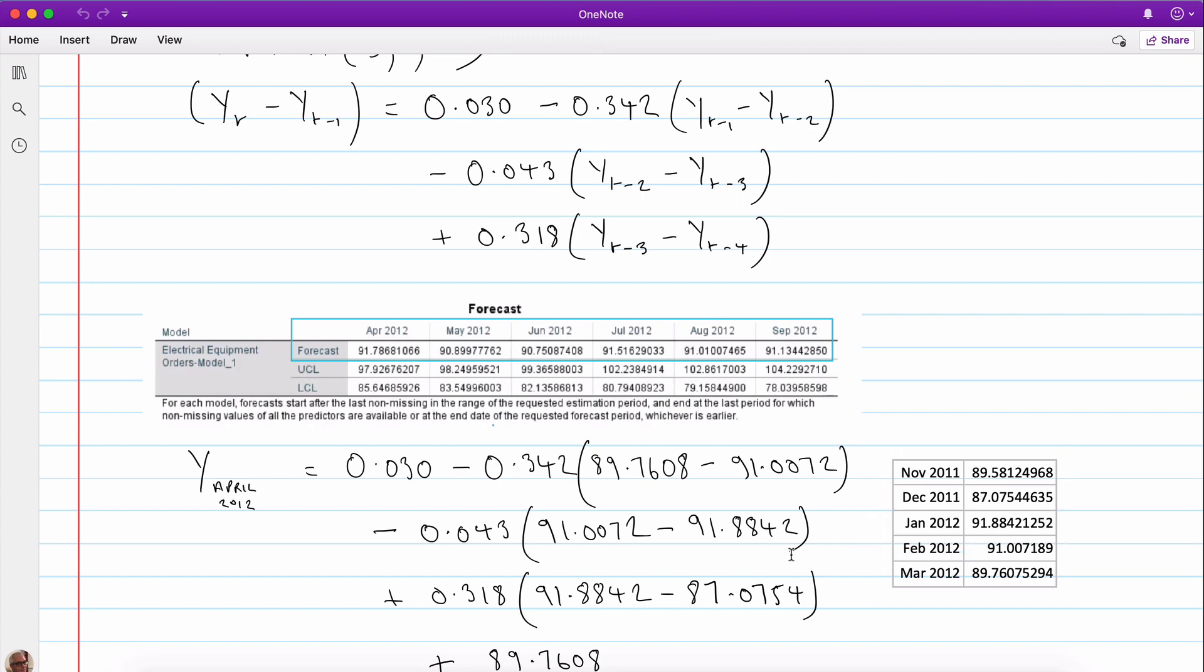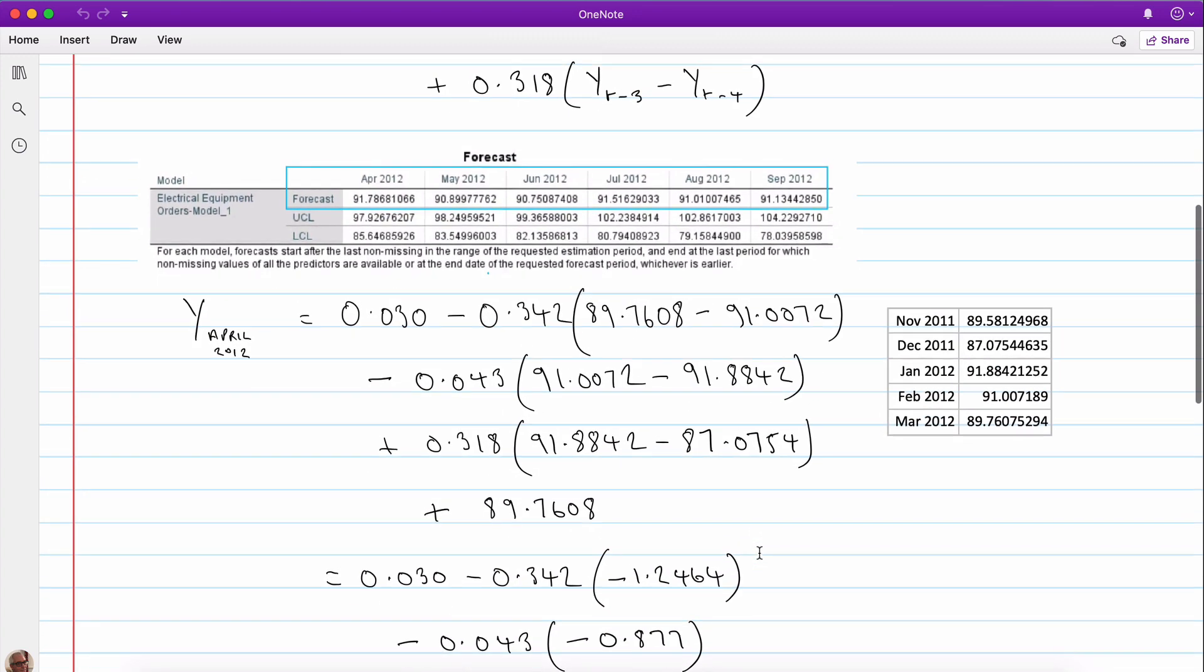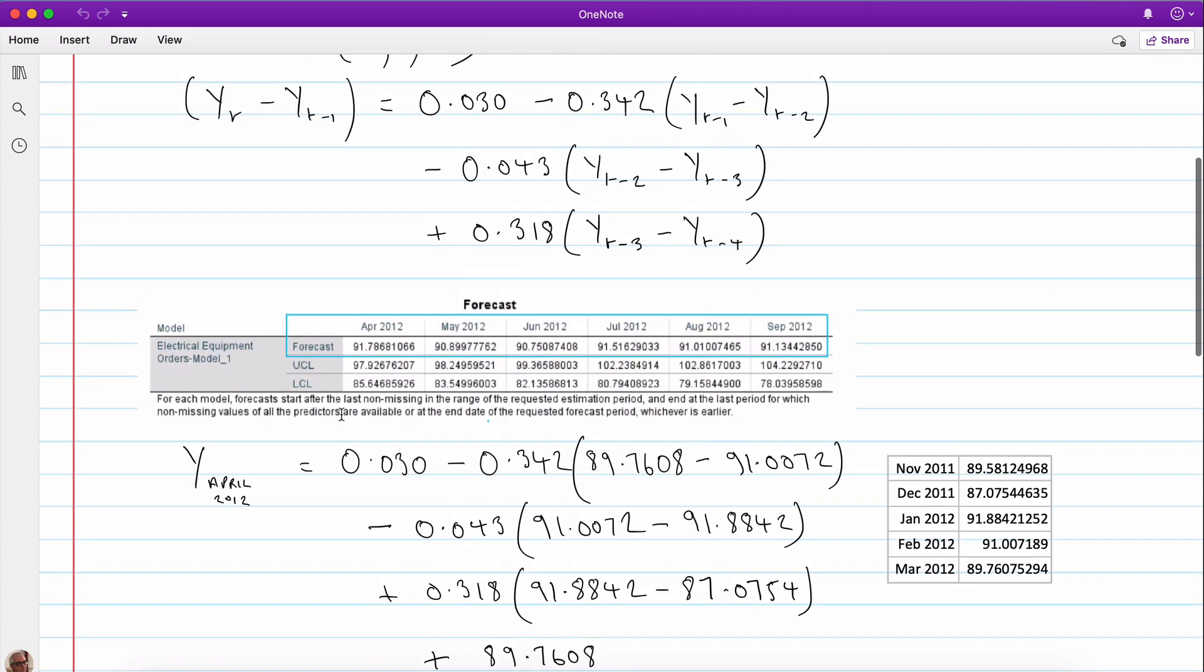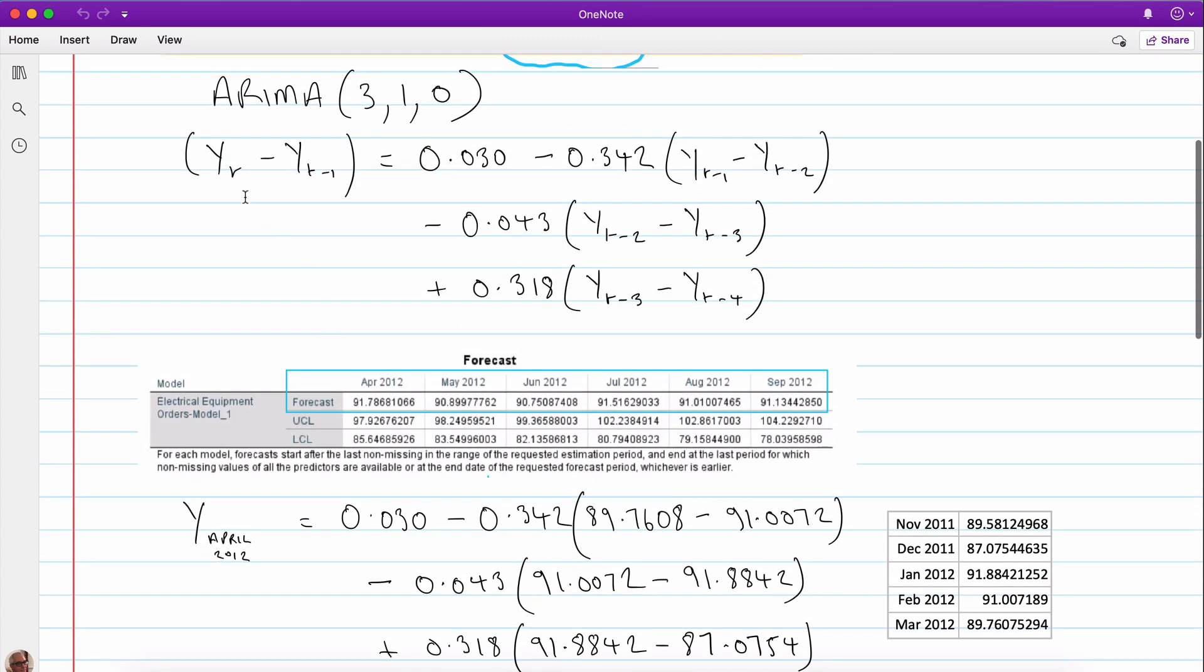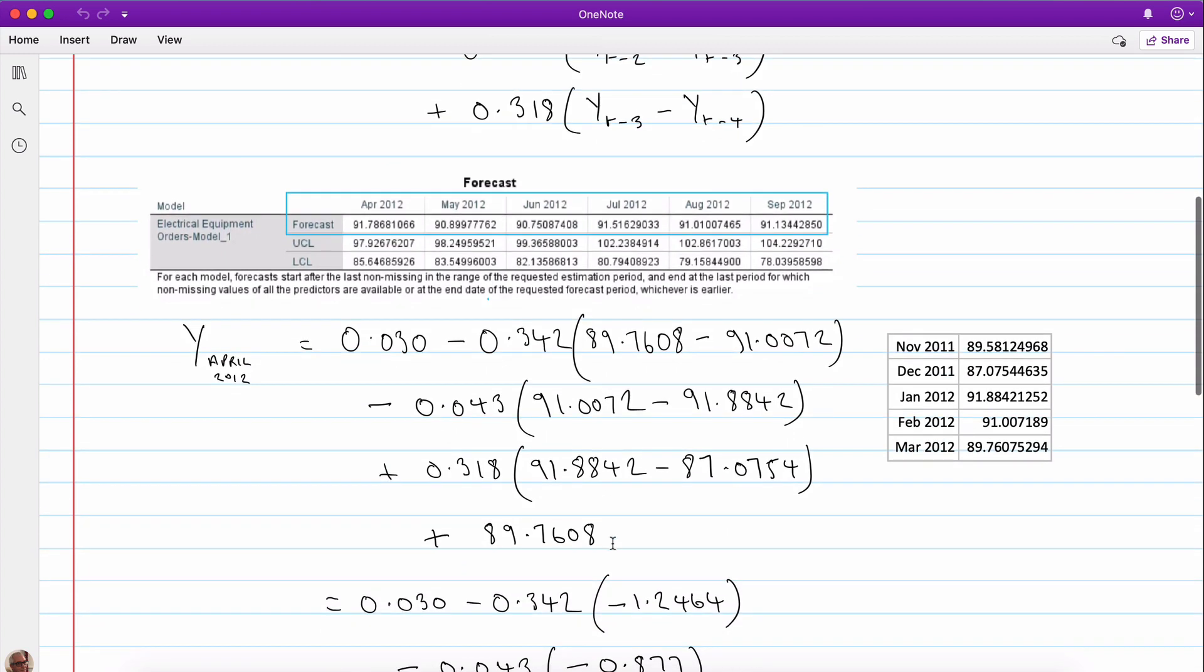Then we have minus 0.43, yt minus two, which again is this one, minus t minus three. That's three periods back, January, 91.8842, and so on. You can see the other ones here. That's four periods back which is December. And notice of course if we look at the equation that here on the left hand side we've got the first difference yt minus yt minus one.